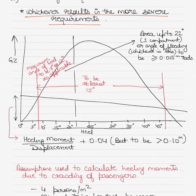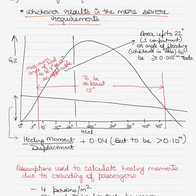Below I have drawn a GZ curve diagram. The GZ is plotted against the angle of heel — one on the x-axis and the other on the y-axis — with angles from 0, 5, 10, all the way to 45 degrees and more. The maximum angle of heel should be at 7 degrees or 12 degrees as applicable, and the area up to 22 degrees of angle of heel — for one compartment flooding or angle of flooding, whichever is less — should be greater than or equal to 0.015 meter-radians.